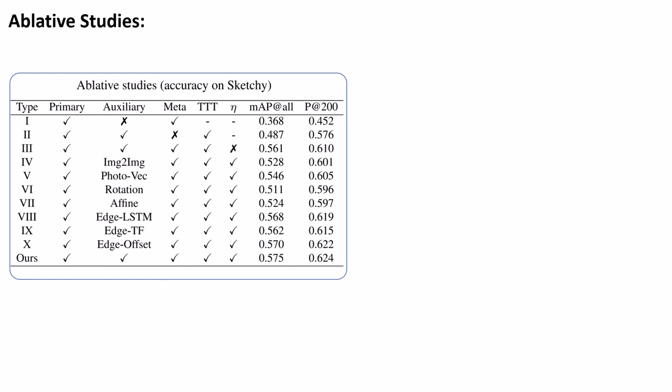We perform various ablative studies to justify our design choice. While absence of an auxiliary task defeats the entire performance, switching off meta-learning or ignoring learning of stroke-specific weights drops results as well. Out of the different auxiliary tasks, photo reconstruction scores most yet is outperformed by ours, as edge-map bears more relevance in context of a sketch than photo, thus enriching the cross-modal manifold accordingly.